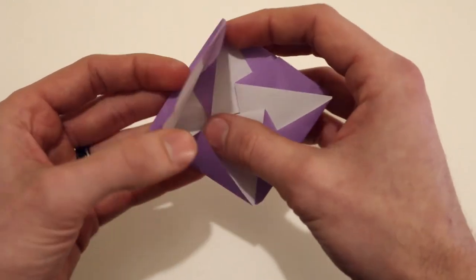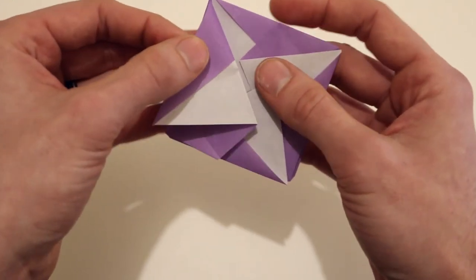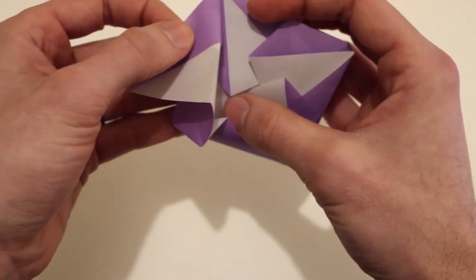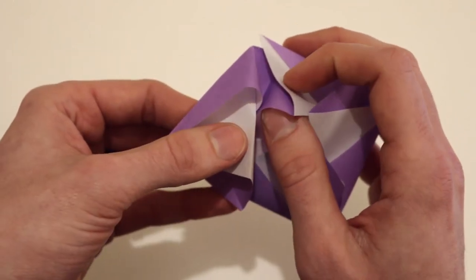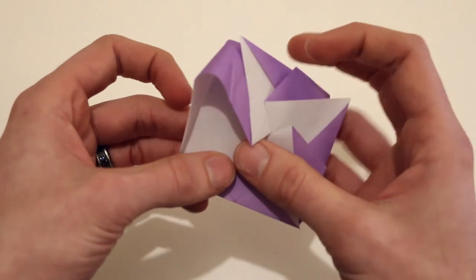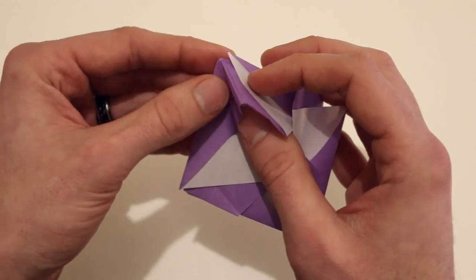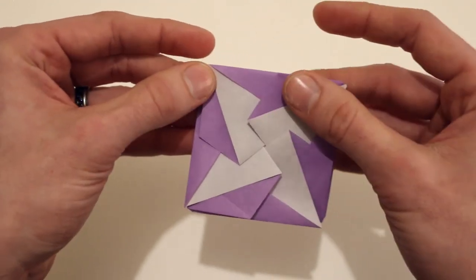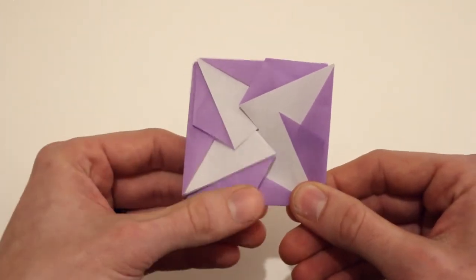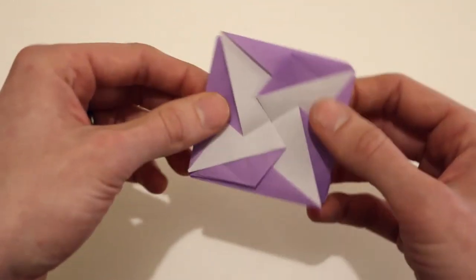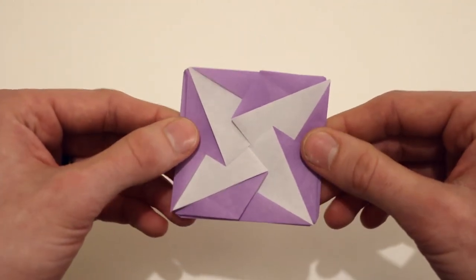So we have to free some of these layers underneath. So we bring this out to the side. And then free this flap out from underneath. And then push this in. Then it should look like this. And we're all done.